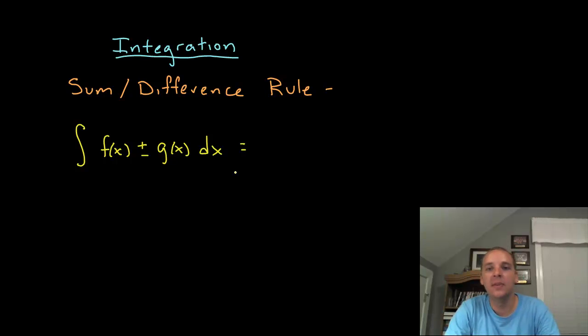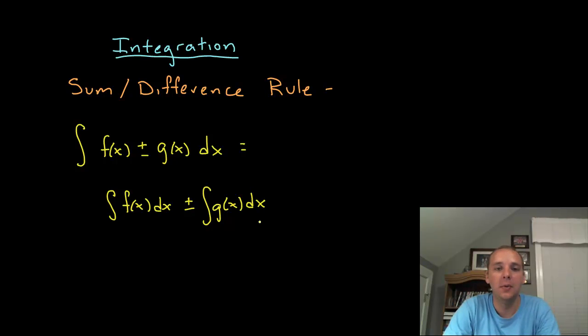All it says is that you simply integrate the first expression—integrate f(x) dx—and then plus or minus the integral of g(x) dx. We can do these on a term-by-term basis, and that's fantastic because usually f and g independently are somewhat easier.